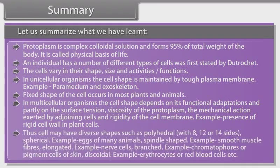Cells may have diverse shapes such as polyhedral with 8, 12 or 14 faces; spherical — for example, eggs of many animals; spindle-shaped — for example, smooth muscle fibers; elongated — for example, nerve cells; branched — for example, chromatophores or pigment cells of skin; and discoidal — for example, erythrocytes or red blood cells.